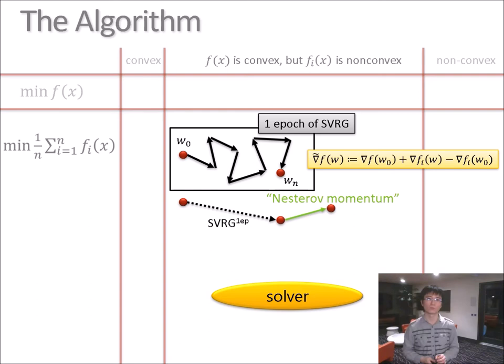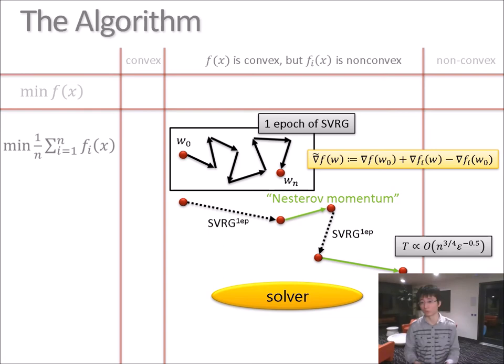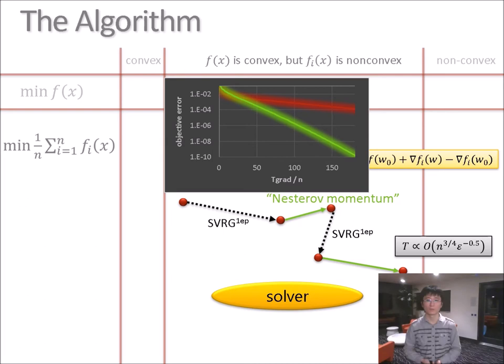And we apply momentum on the epoch level. That is, we apply SVRG, then we apply momentum. We apply SVRG again, then we apply momentum. So this method turns out to converge in the rate n to the three-quarters divided by root epsilon. And it also works very well in practice.